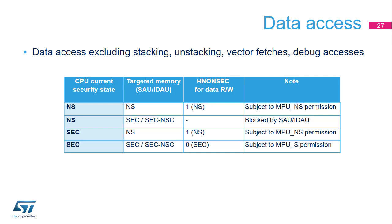This table summarizes the rules defining the AHB5 transaction type according to the target address space when the processor accesses data. When the processor runs in non-secure state, data transactions are marked as non-secure. When it runs in secure state, data transactions are marked as either secure or non-secure depending on the SAU/IDAU setting. Enabling secure software to access non-secure address spaces is mandatory to share memory. One important use case is encrypting in secure state a non-ciphered buffer allocated by non-secure software. When the processor runs in secure state and SAU/IDAU maps the region as non-secure, the data transaction on AHB5 is tagged as non-secure because the data accessed by the secure software is non-trusted and secure firewalls shall not be passed.